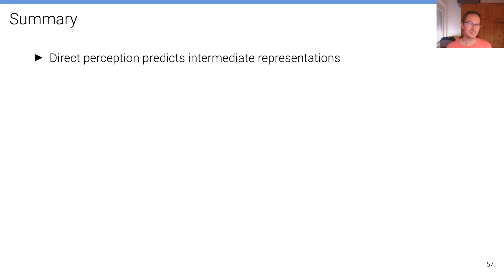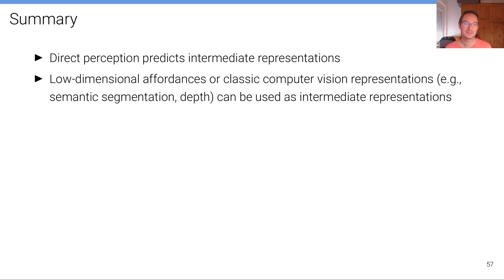This is the end of this lecture. In summary, what we've seen today is that direct perception predicts intermediate representations and low dimensional affordances or classic computer vision representations such as semantic segmentation or depth can be used as intermediate representations.